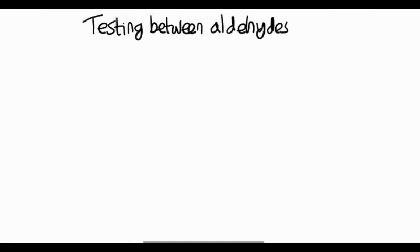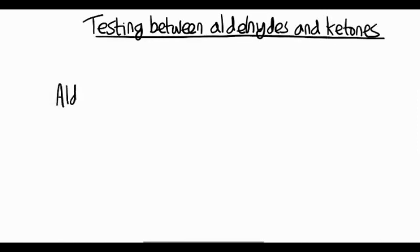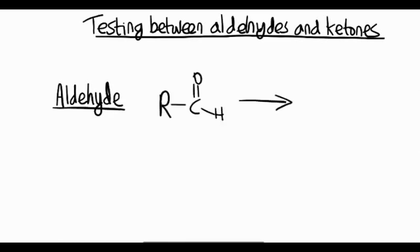Let's have a look at the distinguishing test between aldehydes and ketones. But before we do that, we need to have a look at the structure of aldehydes and ketones. So firstly, an aldehyde contains a C double bond O group, or a carbonyl group, on the end of the chain. And because of that, it can be further oxidized to a carboxylic acid.